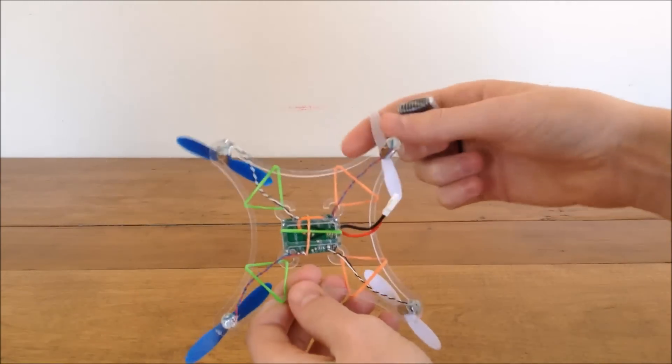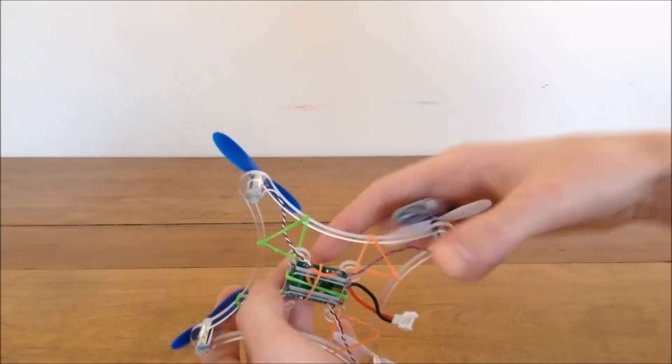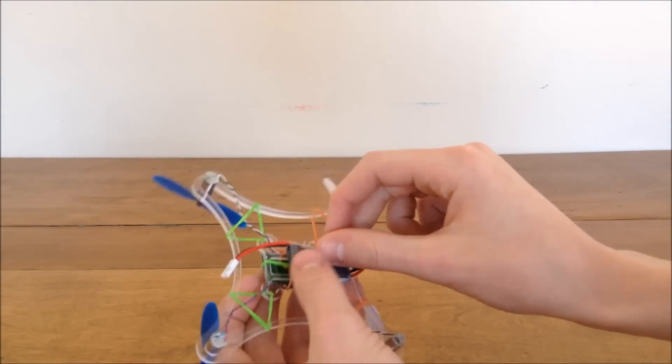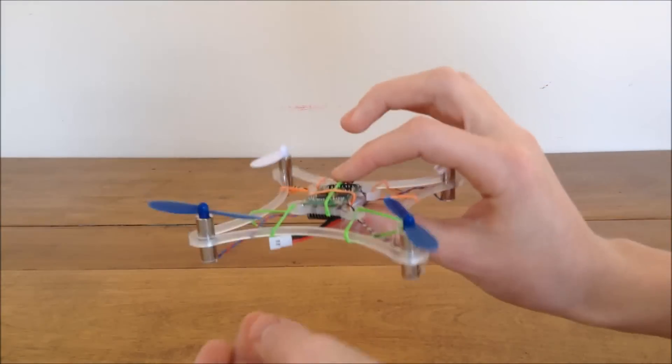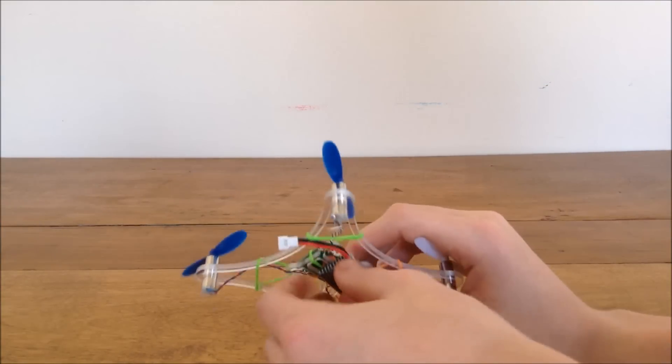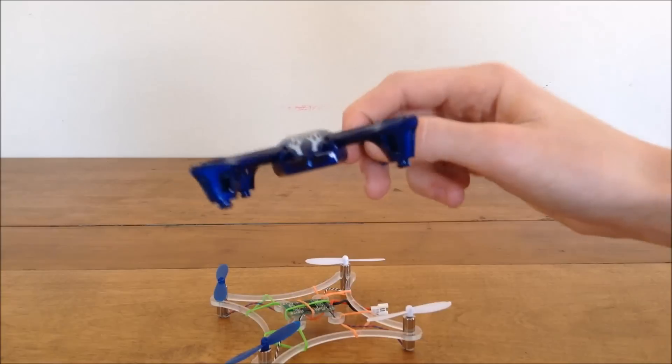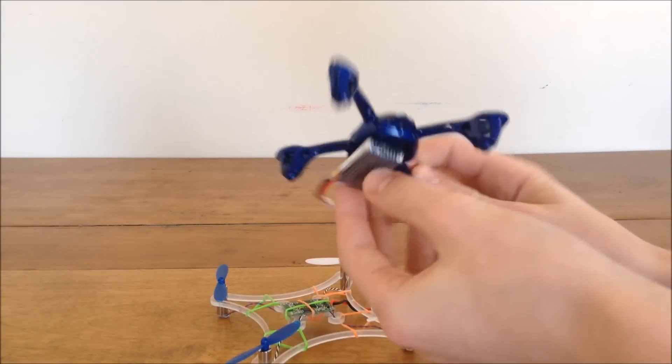So then I saw some other person that did this and I saw they had put it on top, so I put it on top and put my battery underneath. Like most quads are normally like that, the circuit board's on top and the battery's underneath it.